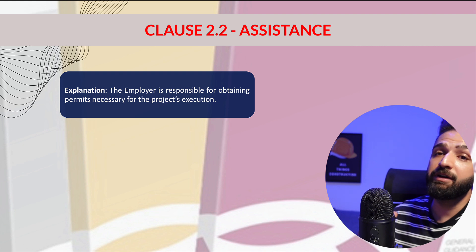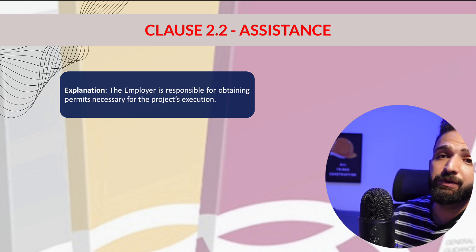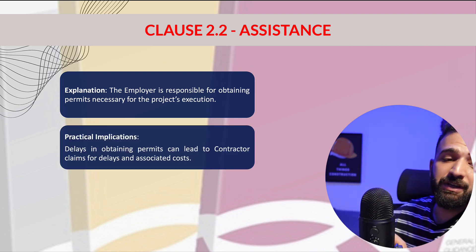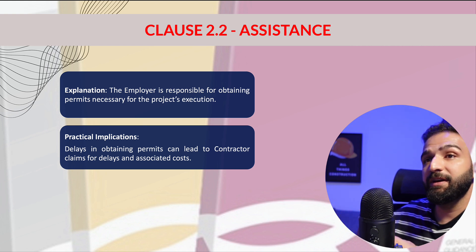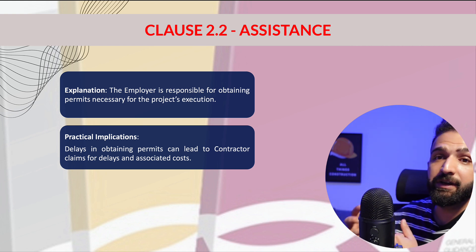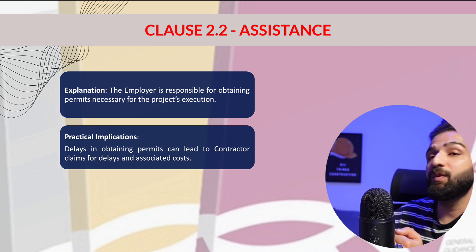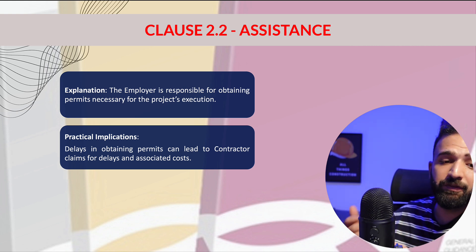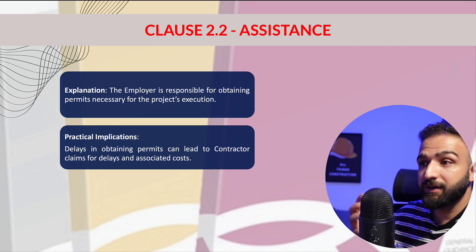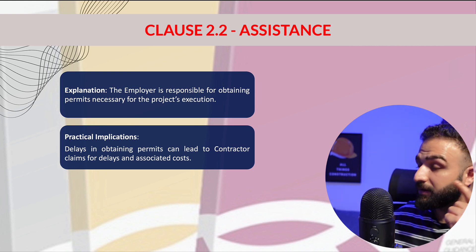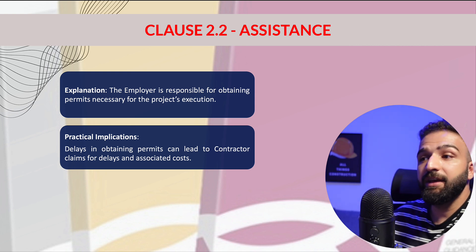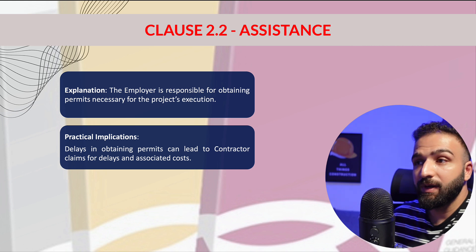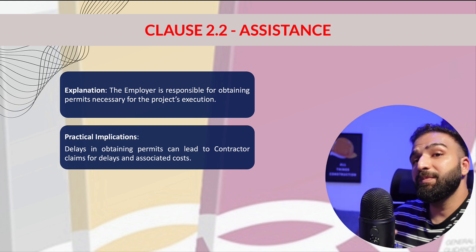It is still the contractor's responsibility to adhere to legal regulations, but the employer's support remains vital in helping the contractor secure these permits. The practical implication is that if the employer does not help secure the required permits in time, this will once again leave the contractor to claim for delays and associated costs under Clause 20.1 and a few other clauses.